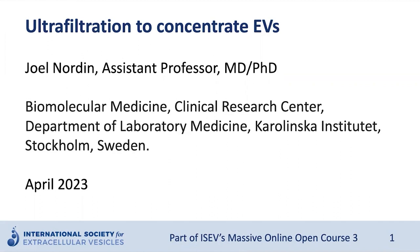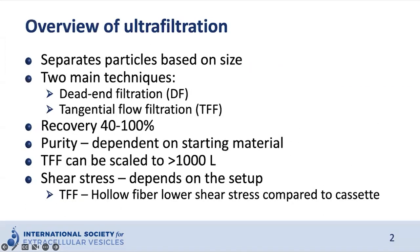Ultrafiltration separates biomolecules based on size and can be divided into two main categories: dead-end filtration and tangential flow filtration. The recovery rate is 40–100%, which means 40–100% of the particles can be found after isolation compared to the number of particles found in a sample before isolation. The purity of the EVs after ultrafiltration depends on the starting material and the technique used.